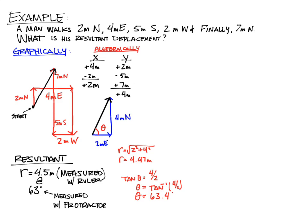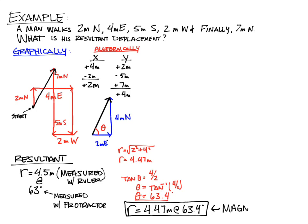So our resultant overall is 4.47 meters at 63.4 degrees. That's the total — it has both magnitude and direction. Magnitude is just the number part: how long or how fast. Direction is the direction part.